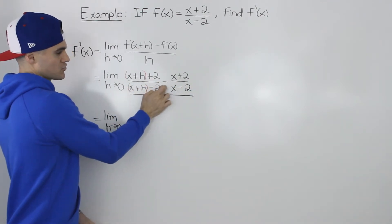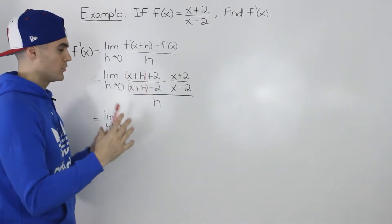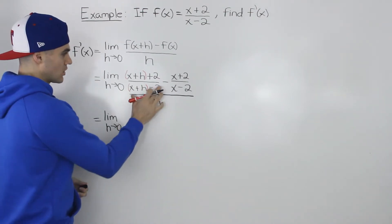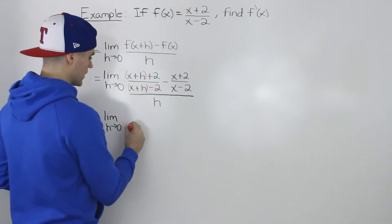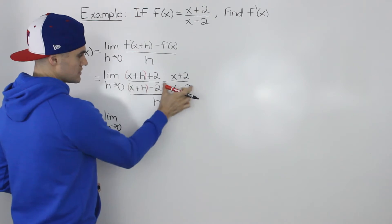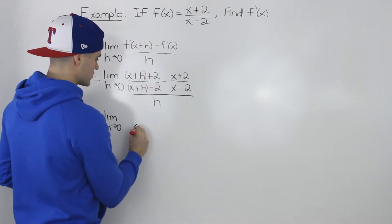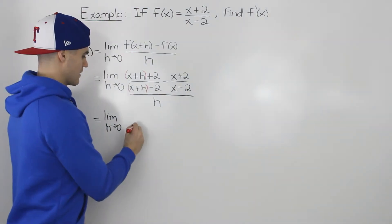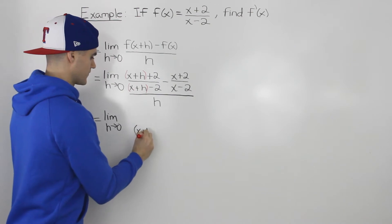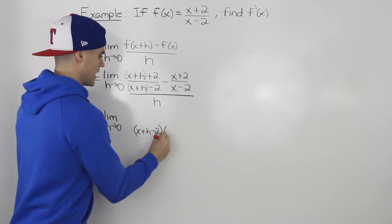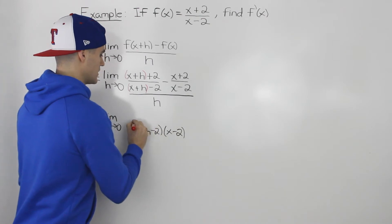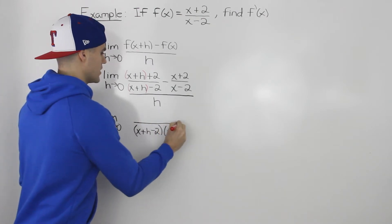To do that we need a common denominator. The common denominator would be these two denominator expressions multiplied by each other: (x+h-2) multiplied by (x-2). So that would be the common denominator.